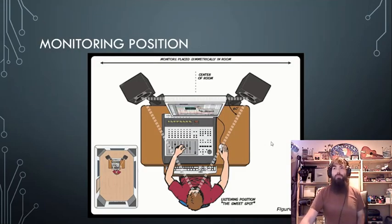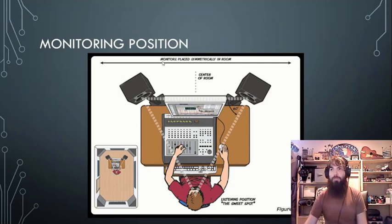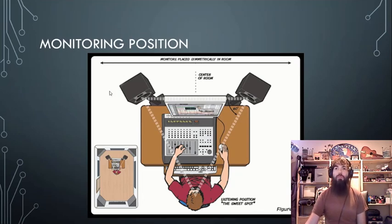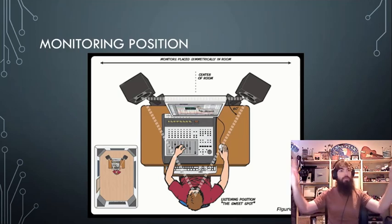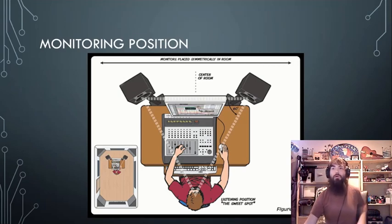Let's move on to monitoring positions. Whenever you're mixing and you've got your signal to the speakers, you want to make sure they're in the right position for the most ideal stereo image. Typically, you want them placed symmetrically within a room — centered so you're not too close to one wall and far from another. You want about a 60-degree angle so they point in toward you. Center yourself up so your left is on the left and your right is on the right. That's what we call the sweet spot.